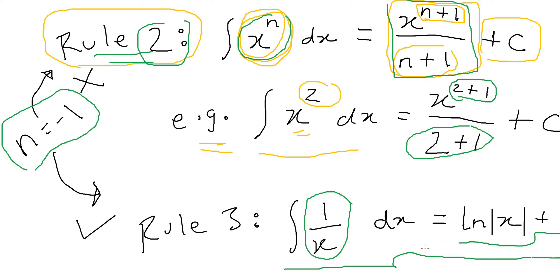Rule 3 states: if your integrand is 1 divided by x, then the integral is going to be ln x plus C. It's quite simple — just remember that if the integrand is 1 over x, the integral is ln x plus C. That's the third rule.